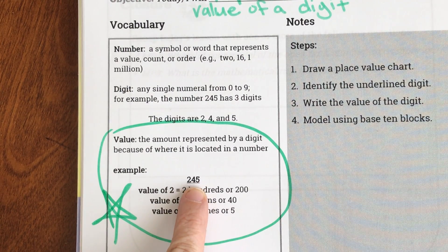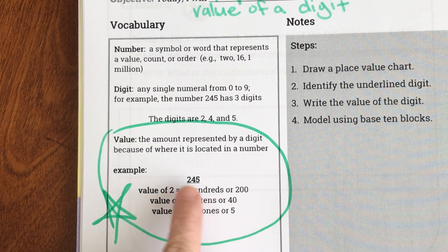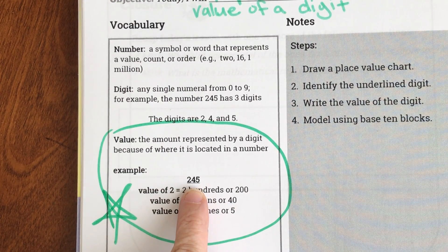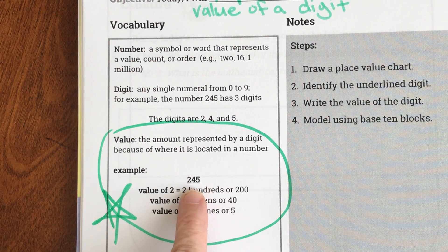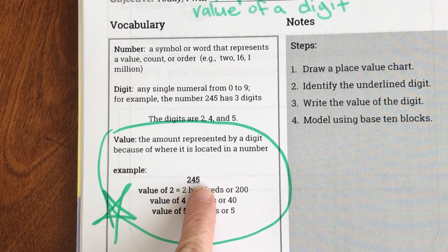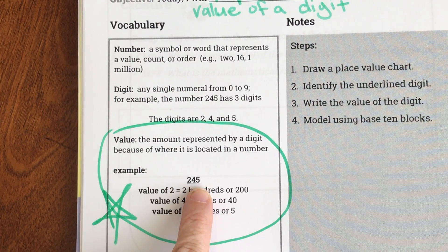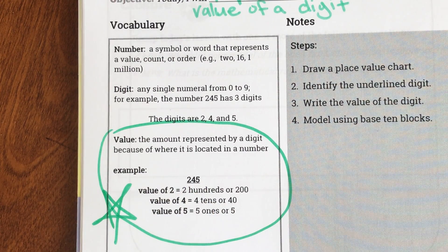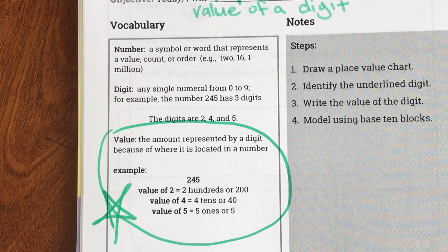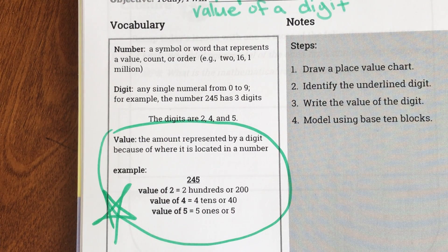The 4, its value of 4 is 40 because there's a 4 in the tens place value. So that means it's worth 4 tens which is value is 40. And then the 5's value of 5 is 5 because it means there's 5 ones. So that's what we're going to be working on today is looking at the value of a number based on where it is.